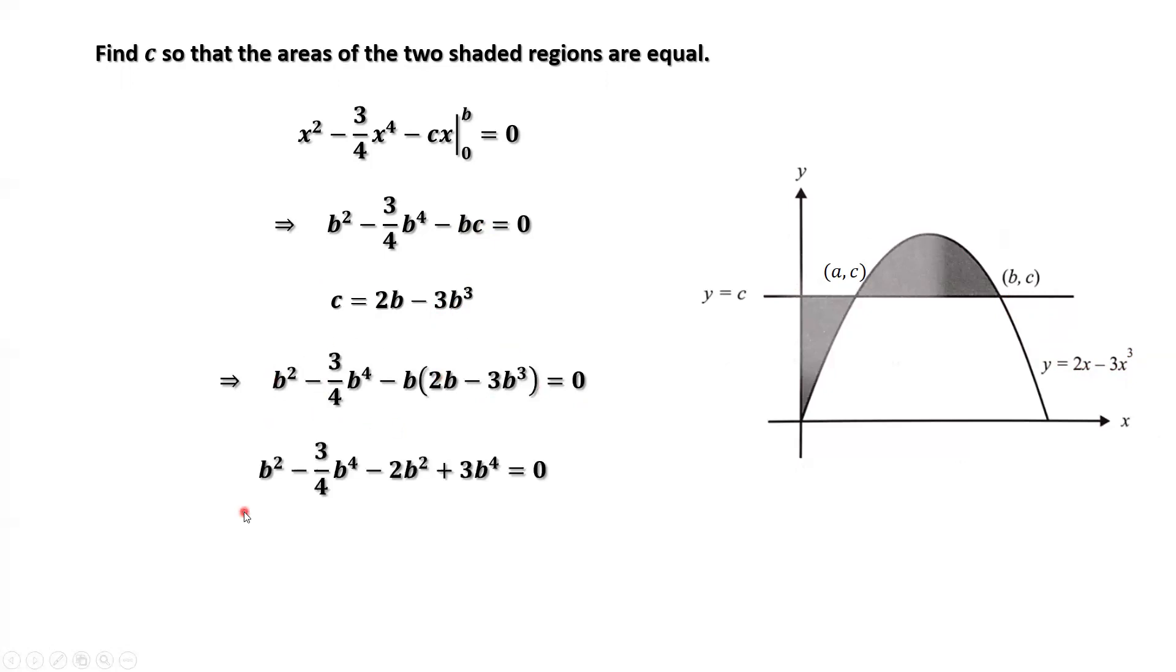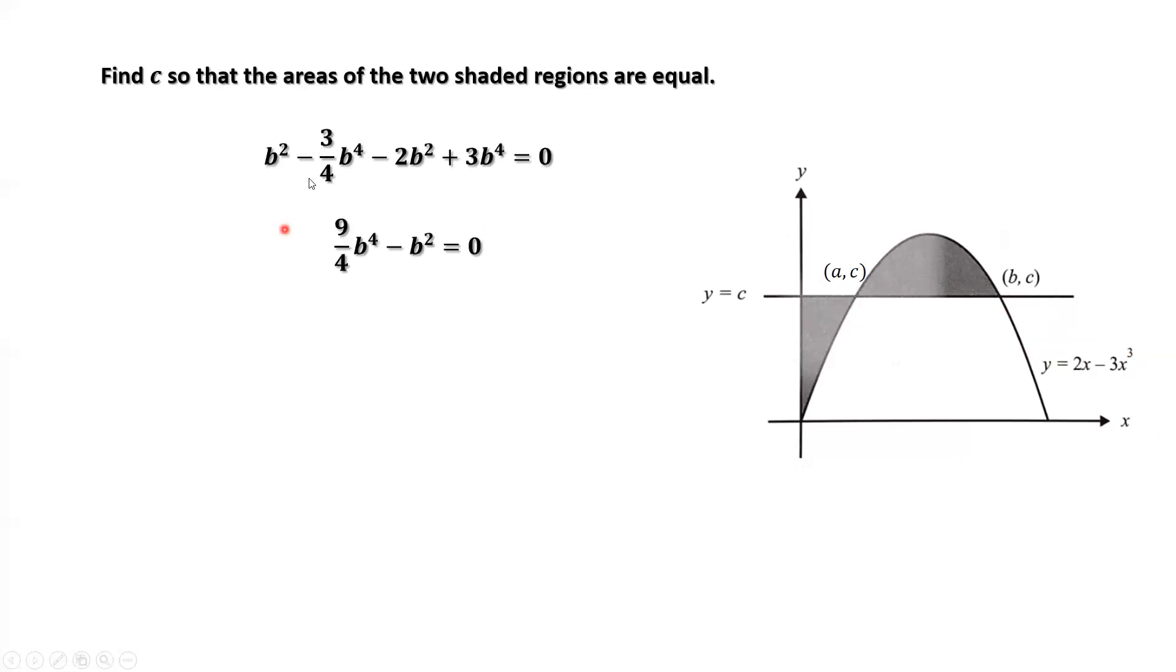Simplify the left-hand side. We have this equation. Continue to simplify the left-hand side. We have 9 over 4 times b to the power of 4 minus b squared equals 0.